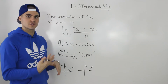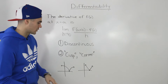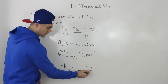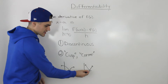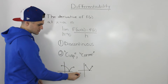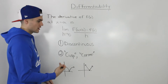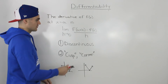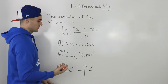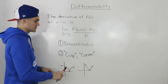Another case that's a little less intuitive than the discontinuity case is a cusp or a corner — for example, the vertex of an absolute value function. At a cusp or at a corner, a function is not differentiable; the limit expression is not going to exist at that certain x value. That's what we're going to focus on in this video.